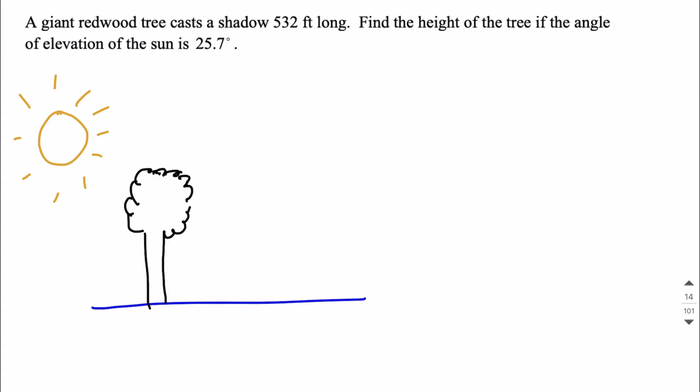And what that sun does is it's going to shine right down here. And what ends up happening is along the ground, we're going to get our shadow that's blocked out by the tree.